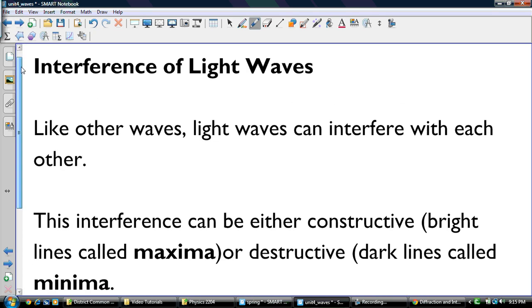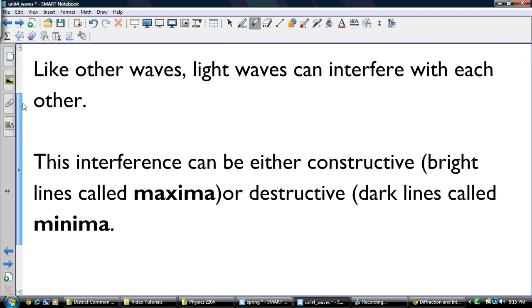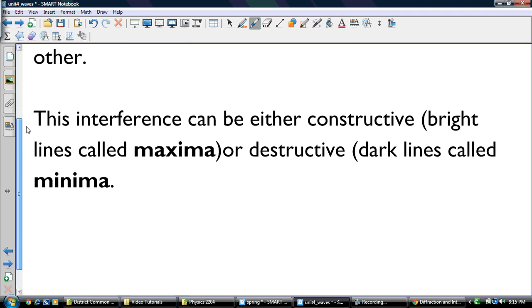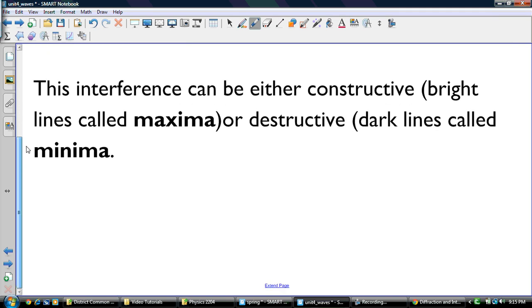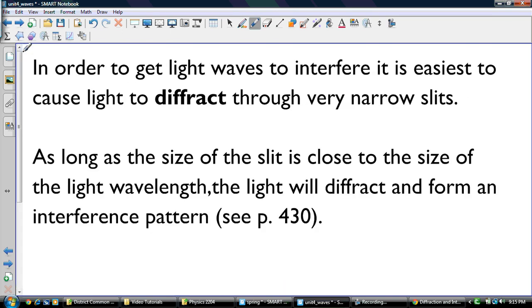Interference of light waves. Like other waves, light waves can interfere with each other. This interference can either be constructive, bright lines called maxima, or destructive, dark lines called minimas.